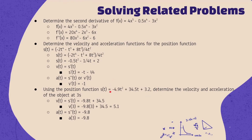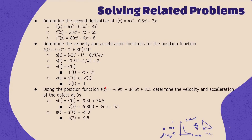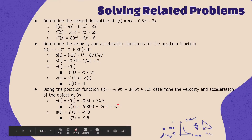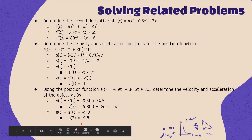For the next question we have a position function and need to find velocity and acceleration at three seconds. Finding v(t) as the first derivative of s(t) gives negative 9.8t plus 34.5; substituting t=3 gives 5.1 m/s. Taking the second derivative gives negative 9.8, and since there's no variable, the acceleration is negative 9.8 m/s² for all values of t.